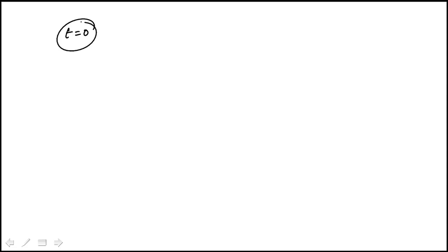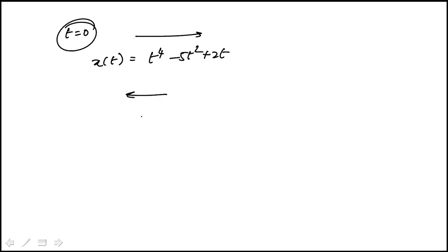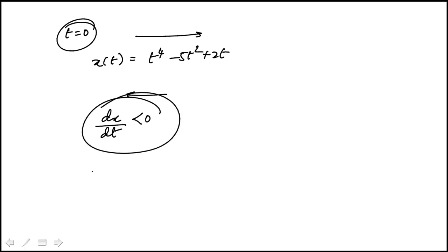In this question, a particle starting at t equals 0 moves along the x-axis, and its position is given by this function. The question asks for what values of t the particle is moving to the left. The key thing to recognize is that if it's moving to the left, x is decreasing, and its velocity would be negative. That's the condition we need to apply.